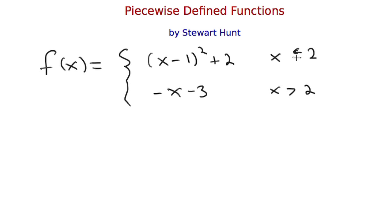When x is to the left of 2, it's this first piece. And when it's to the right of 2, it's the second piece. So that's why we call it a piecewise defined function.